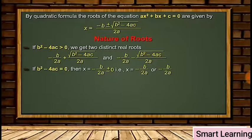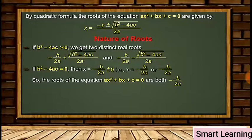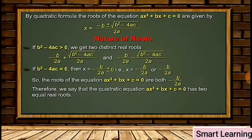If b² - 4ac is equal to 0, then x = -b/2a ± 0, that is x = -b/2a or -b/2a. So the roots of the equation ax² + bx + c = 0 are both -b/2a. Therefore, we say that the quadratic equation has two equal real roots.